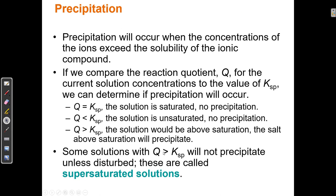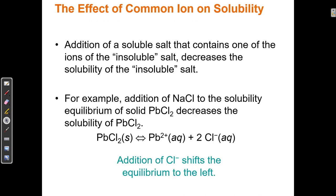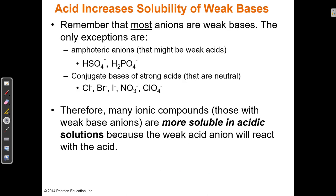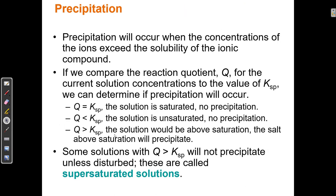Anything that drives a solubility reaction forward increases solubility — more solid dissolves into ions. Anything that drives the equilibrium backward causes more solid to form, and when more solid forms from solution, we call that precipitation.